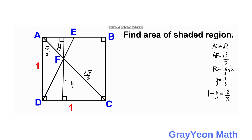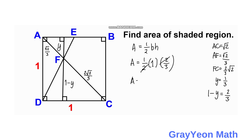For the final step, the area of triangle FCD equals 1/2 times base times height. The base is 1 and the height is 1 minus Y, which equals 2/3. So the area equals 1/2 times 1 times 2/3, which is 1/3 square units. That is our answer.